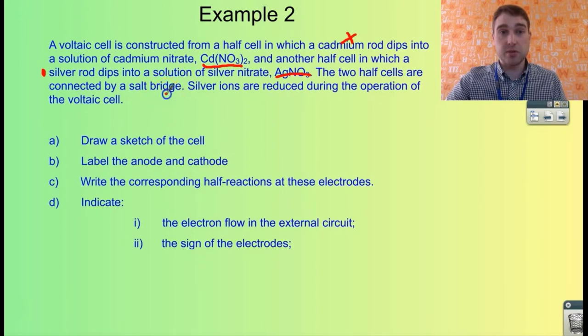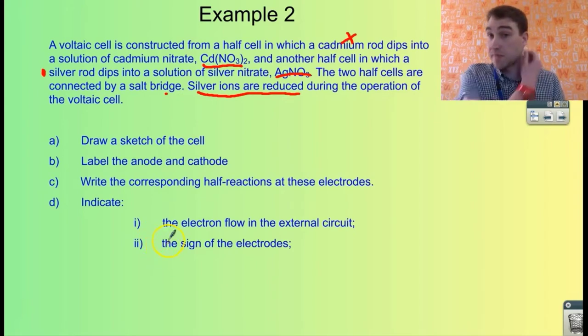The two half-cells are connected by a salt bridge, and the silver ions are being reduced - that is very important. So the silver is being reduced, which means the cadmium has to be oxidized. We need to draw a sketch of the cell, label the anode and cathode, write the half-reactions, and indicate electron flow and sign of the electrodes. Let's do that now.